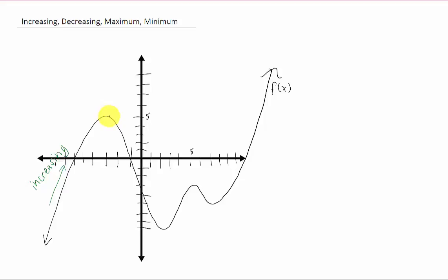Then we get to about right here and start walking downhill, and we say that this function is decreasing. Then we continue walking along from left to right, and we start going uphill again. We're increasing here as well, decreasing here, and then finally, we're increasing forever in that direction.